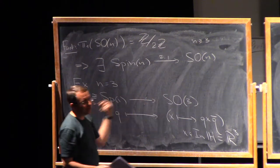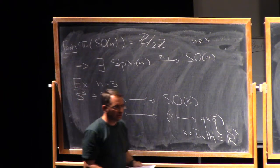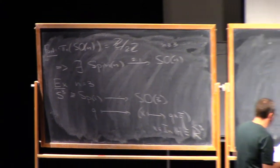And we also see that minus 1 here goes to the identity transformation, so it has a kernel plus minus 1. And then, you can check that this is a non-trivial cover.